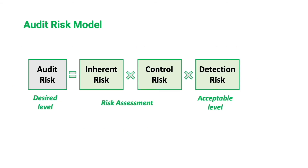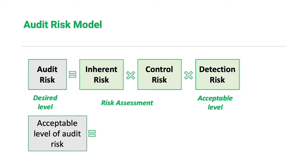To illustrate further: for a given level of desired audit risk, the acceptable level of detection risk has an inverse relationship to the assessed risk of material misstatement at the assertion level — meaning the assessed inherent and control risk. The greater the risk of material misstatement the auditor believes exists, the less detection risk can be accepted, because we want to keep overall audit risk at a low level. Conversely, if the risk of material misstatement is lower, we can increase our acceptable level of detection risk and still maintain an appropriate level of audit risk.